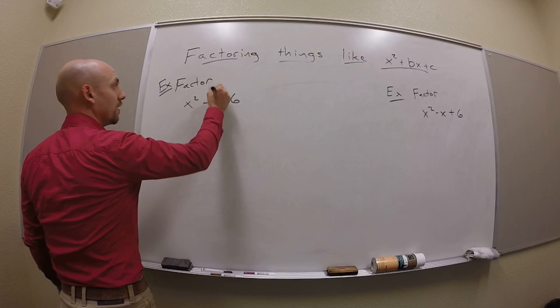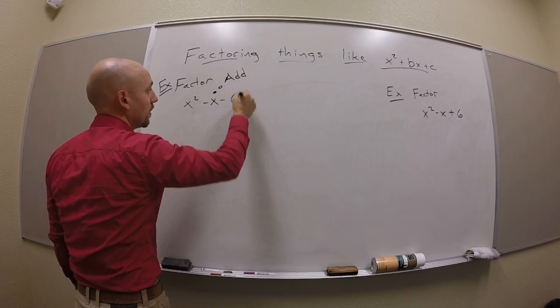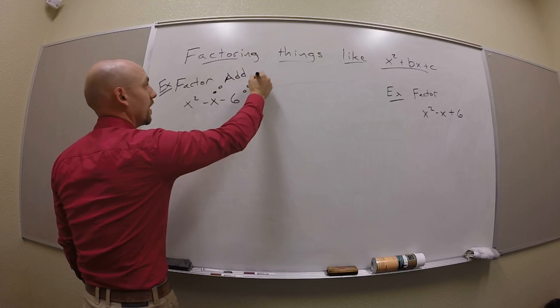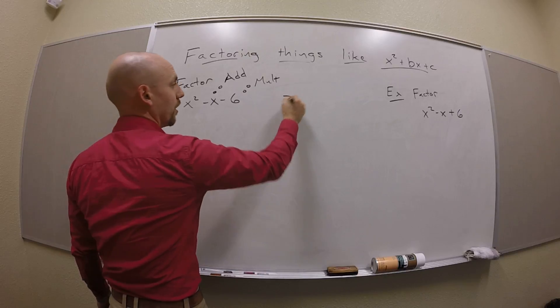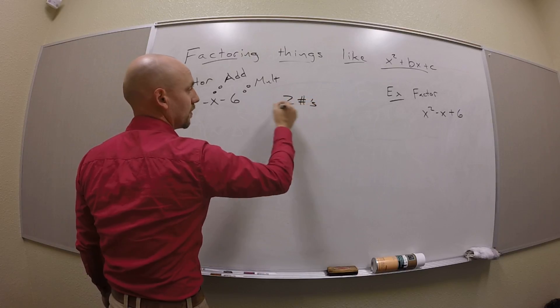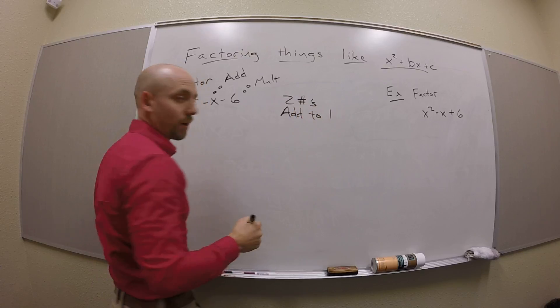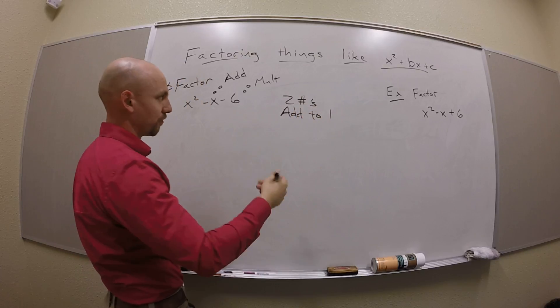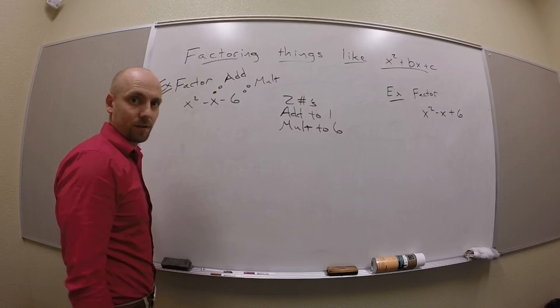So right here on the minus x, I'm thinking that's the add part. And right here on the minus 6, that's the multiplying part, right? So I'm looking for two numbers that add to 1, really minus 1, but you can drop the sign, and multiply to 6.